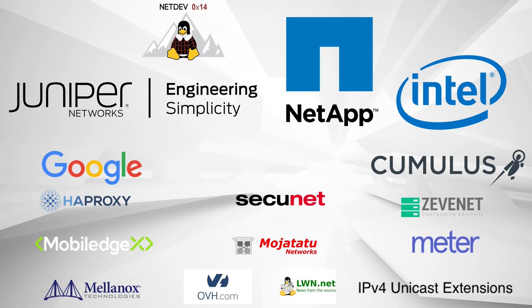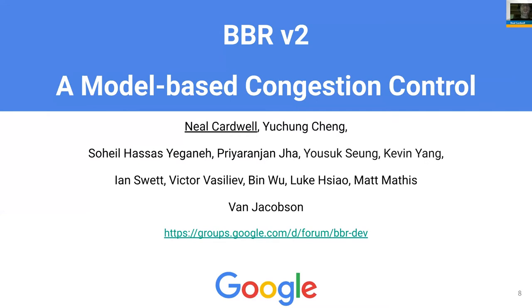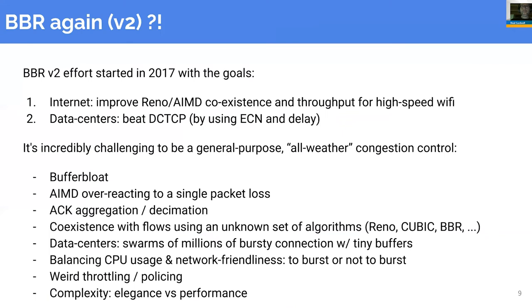We'll move to our next talk: BBR2 summary. We wanted to give an overview and update on the work our team at Google has been doing on BBR congestion control - joint work with Yuchun, Sohail, and the broader team. We talked about BBR at NetDev in fall 2016 just after releasing the first version upstream. Since then we've been working on BBR v2, which started in 2017 with high-level goals in two parts: improving BBR's coexistence with AIMD-style protocols like Reno and Cubic, improving throughput for high-speed WiFi links, and improving BBR's performance inside data centers to beat or at least match DCTCP using ECN and delay signals.